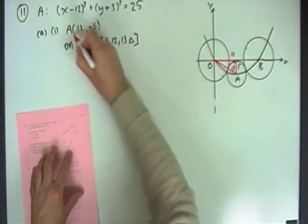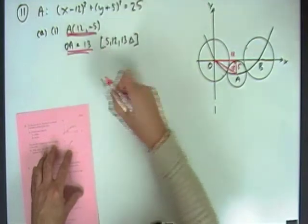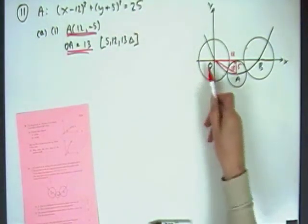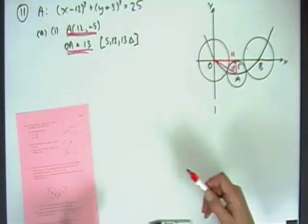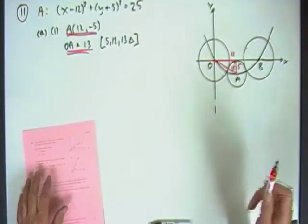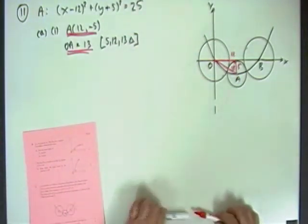So I could just state it straight off, OA is 13, I'll give the reason beside it, because I've got a 5, 12, 13 triangle. If you didn't know it was a 5, 12, 13 triangle, you would just have to do your Pythagoras. OA squared is 12 squared plus 5 squared. Learn your triangles, 3, 4, 5, 5, 12, 13, very common in the higher.